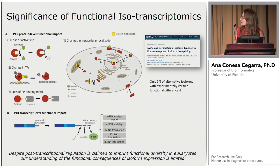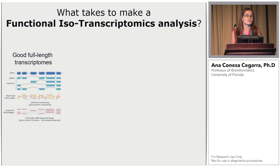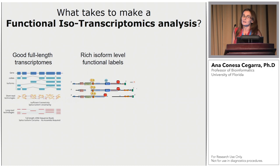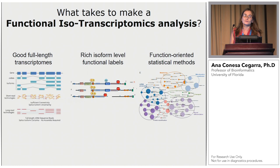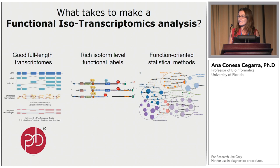When I started this project, I wanted to understand what was needed to do a real functional isotranscriptomics analysis. First, you need good full-length transcripts to be able to say this is the difference between one isoform and another. To say something computationally about function, you need rich annotation of these sequences so you can differentiate what functional elements are included or excluded among isoforms. And then you need novel statistical methods to interrogate the data. We now have PacBio long reads that resolve these full-length transcripts, and we have been working on generating the primary data needed for this kind of analysis.